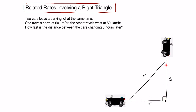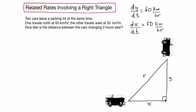Let's pull out the information given. The car traveling north goes at 60 kilometers per hour, meaning the change in y with respect to time, dy/dt, is 60 km/h. The car traveling west goes at 50 kilometers per hour, meaning dx/dt equals 50 km/h. We want to find how fast the distance r between the cars is changing, so we're looking for dr/dt.